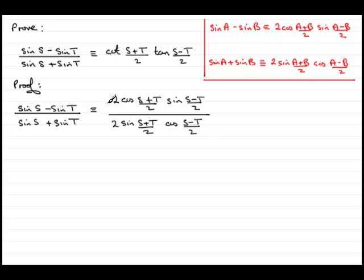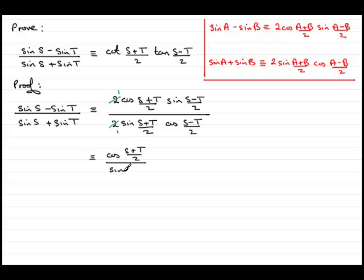Now we have one term on the top and one term on the bottom, so we have common factors. We can see that 2 is a common factor in both, so we divide: 2 into 2 goes 1. There are no other common factors. So what we have is cosine of S plus T over 2, divided by sine of S plus T over 2.